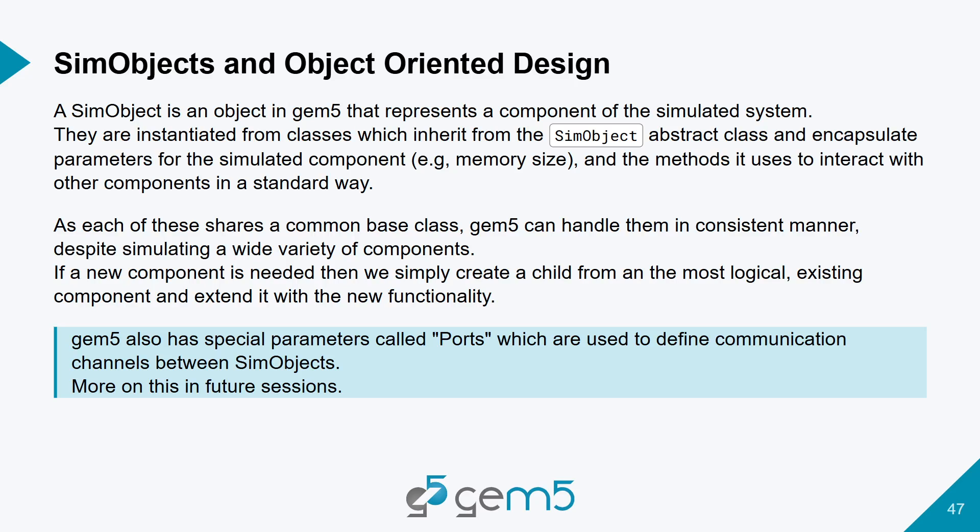The SimObject is an object in gem5 that represents a component in the simulated system. We haven't been very consistent with our terminology — in some slides they're referred to as models, but here we call them SimObjects. They are components in gem5 that are instantiated from the SimObject classes, and they are used to encapsulate parameters and methods, which are then used in the gem5 simulator to simulate the system.